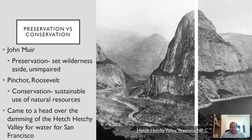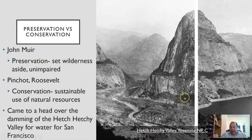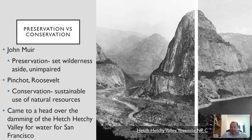John Muir was a preservationist and naturalist who wanted these areas set aside and unimpaired. Pinchot and Roosevelt believed in conservation — sustainable use of natural resources. This created a schism, putting them on opposite sides of the fence. There's a link to a video that goes into great detail about this difference between preservation and conservation and what Hetch Hetchy Valley used to be versus what it is now.